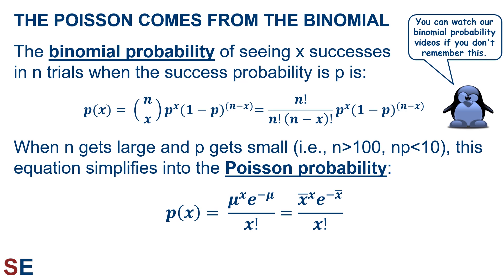It turns out that when the number of trials gets large and the probability gets small — as a rule of thumb when n is greater than 100 and n times p is less than 10 — the binomial probability equation simplifies into the Poisson probability equation. This equation gives the probability of seeing x successes as the mean number of successes raised to the power x, times e raised to the power negative mean, divided by x factorial. The two equations shown are for when you have either the population mean or are using a sample mean to calculate your probability.